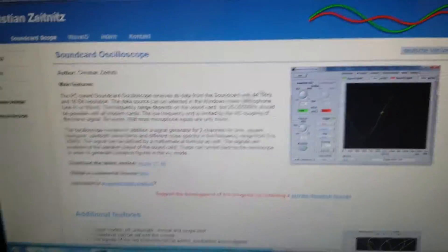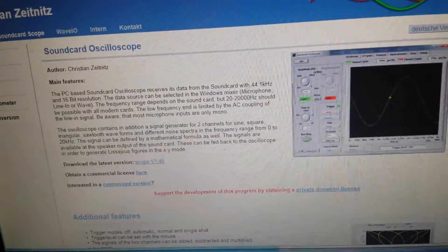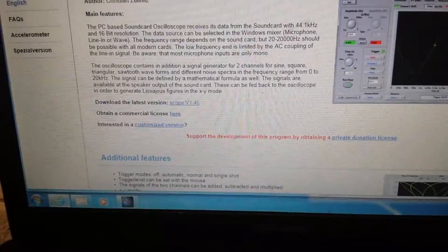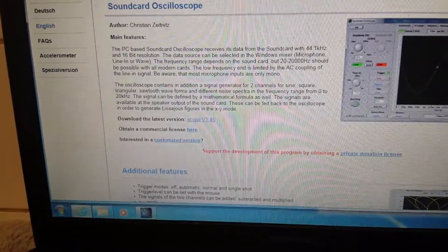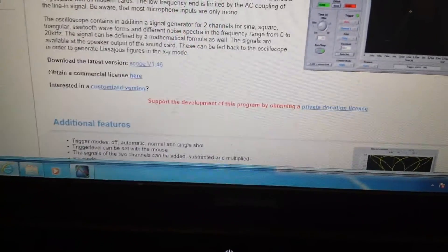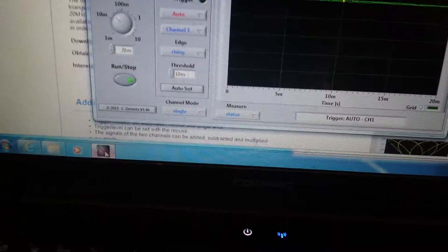Here we have a free download of this program, you can see scope 1.46. If you're using XP you might want to go for the 1.46 version because I believe there's a 1.8 version which is a little bit buggy, but the advantage of the 1.8 version is that you can stretch the screen to be quite a full screen version.